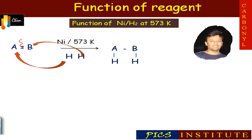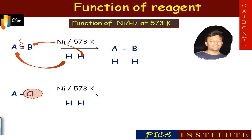This reaction involves addition of hydrogen, so it is an addition reaction, also called reduction or hydrogenation reaction. The second function of nickel hydrogen is replacement of halogen by hydrogen. For each halogen, nickel uses two hydrogen atoms; splitting of the halogen takes place as HCl, and the remaining hydrogen occupies the place of halogen to form a saturated compound. This is a substitution or replacement reaction.